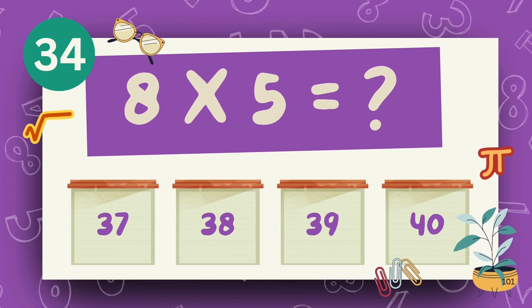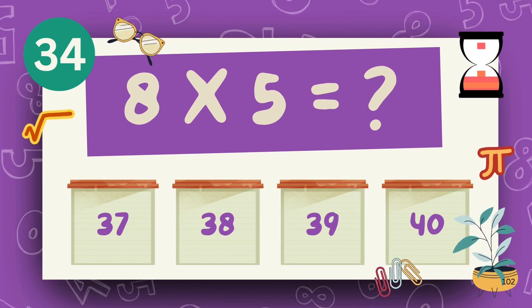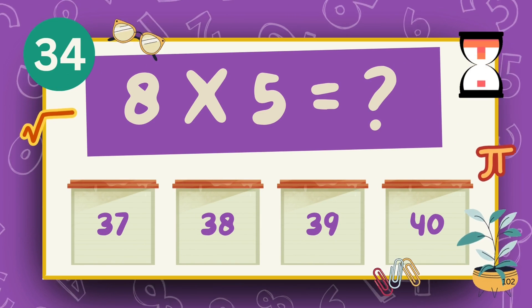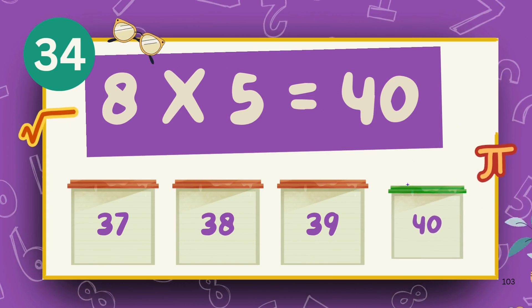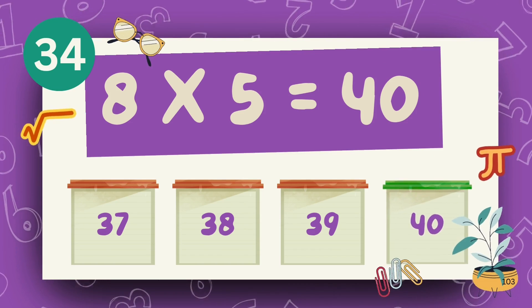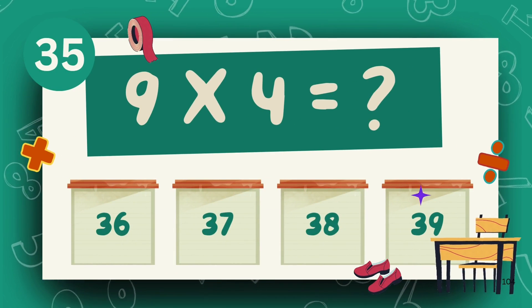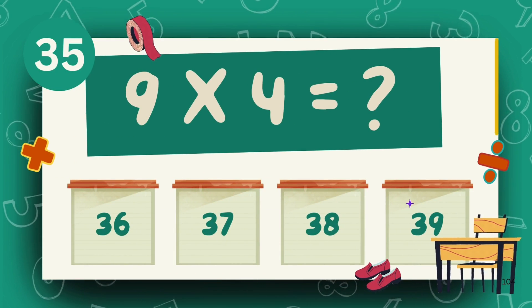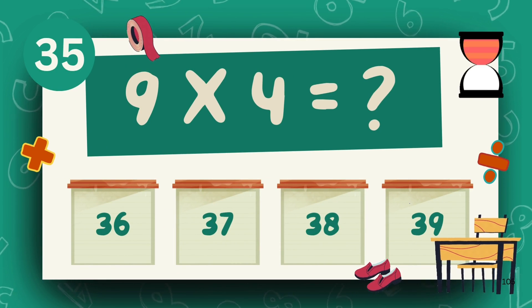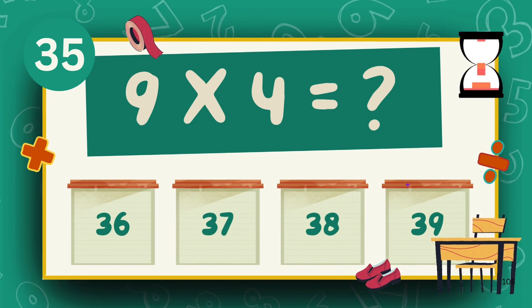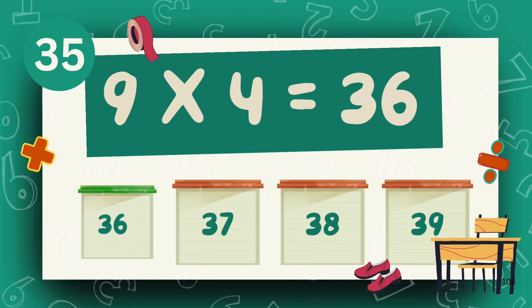What is 8 multiply 5? The answer is 40. What is 9 multiply 4? The answer is 36.